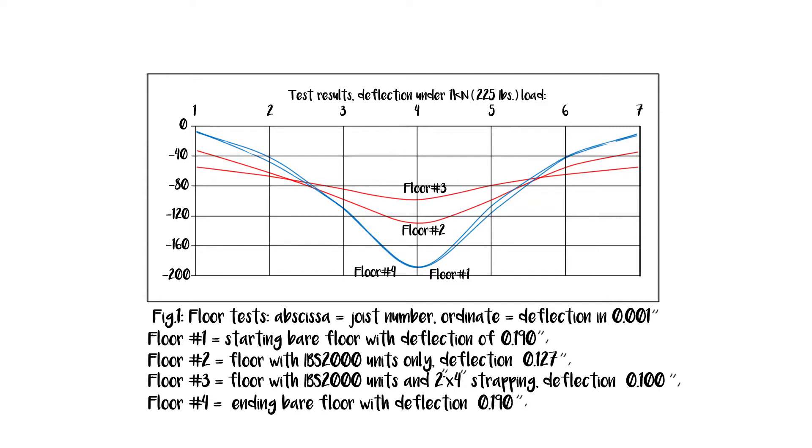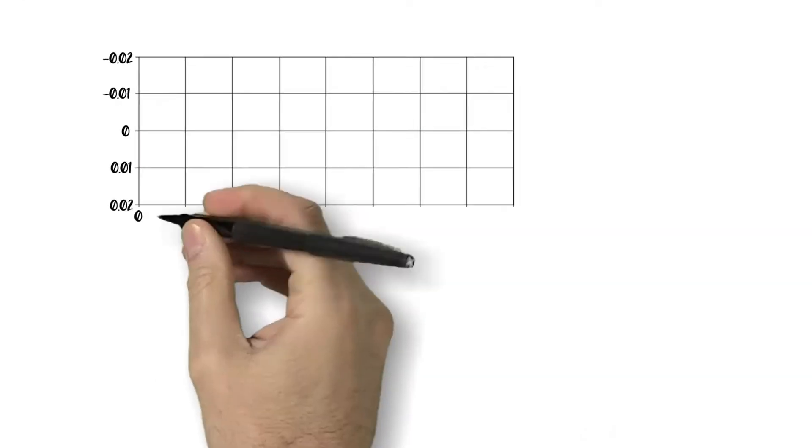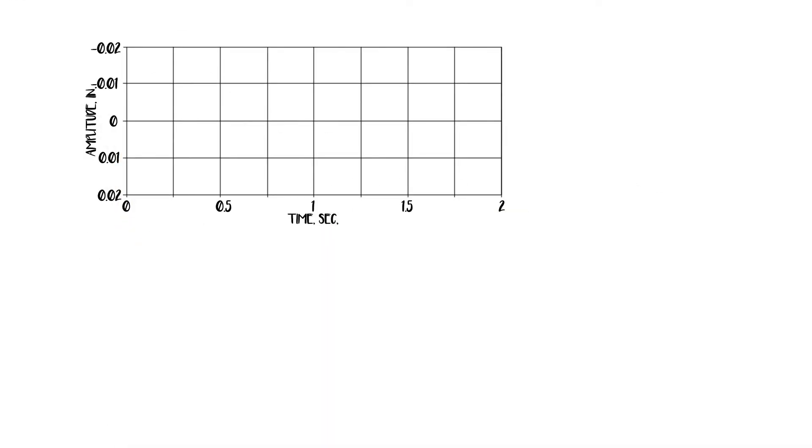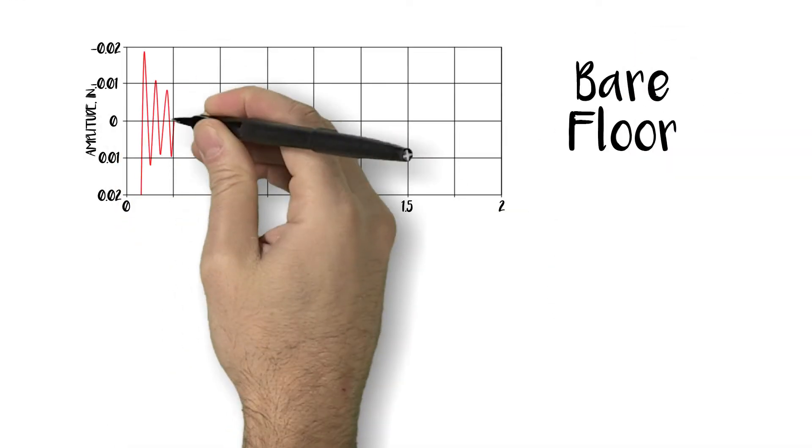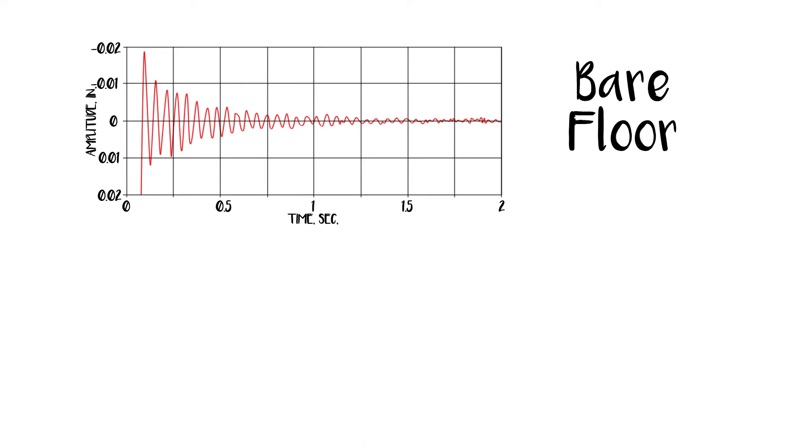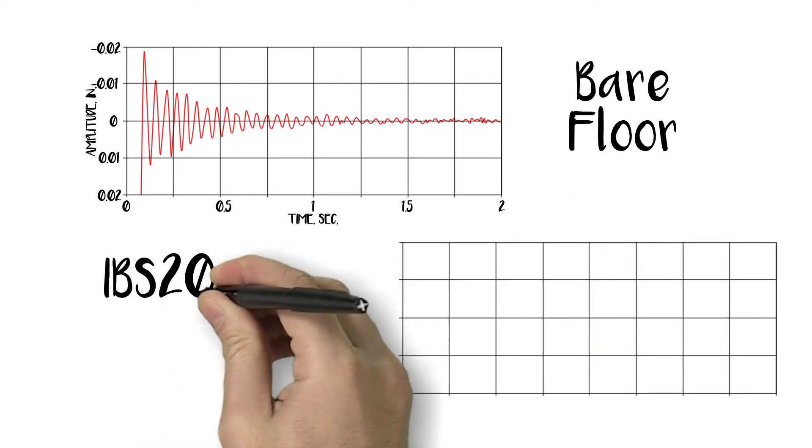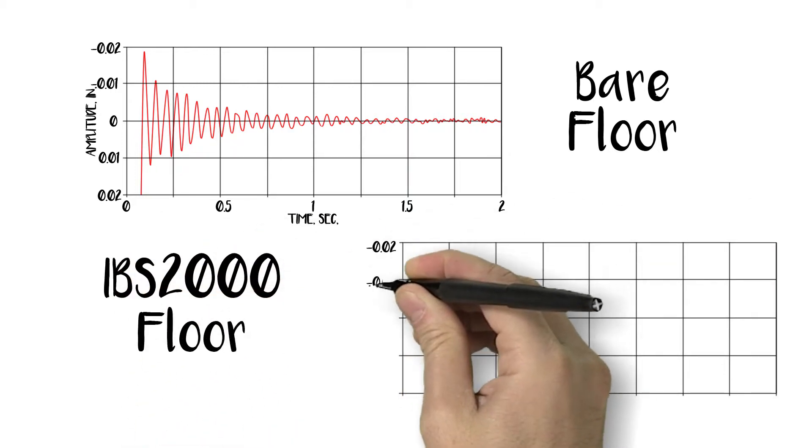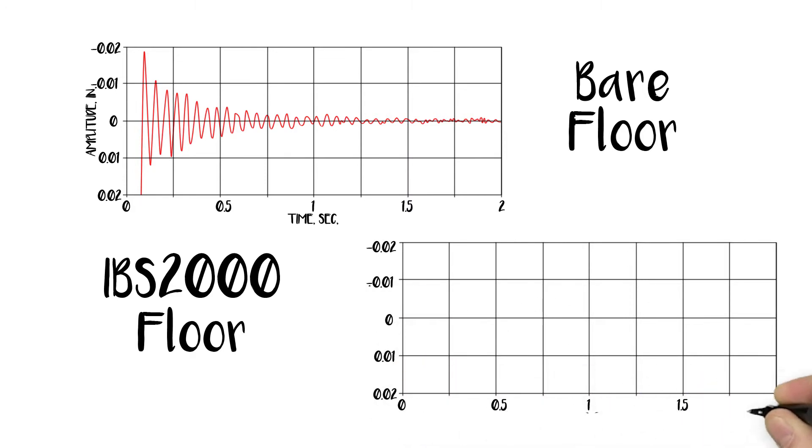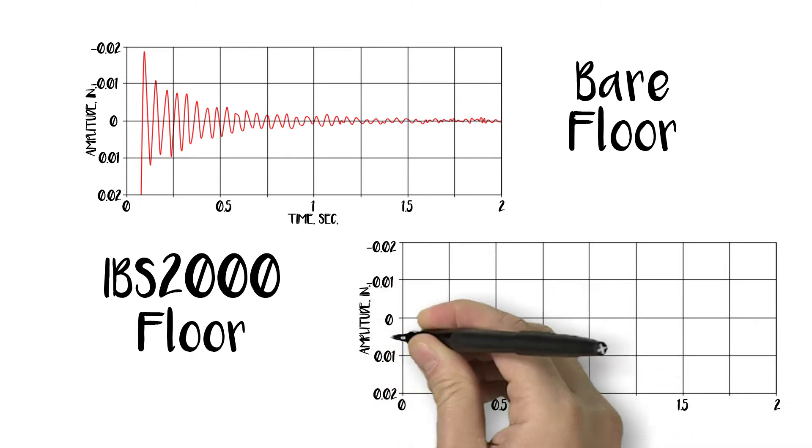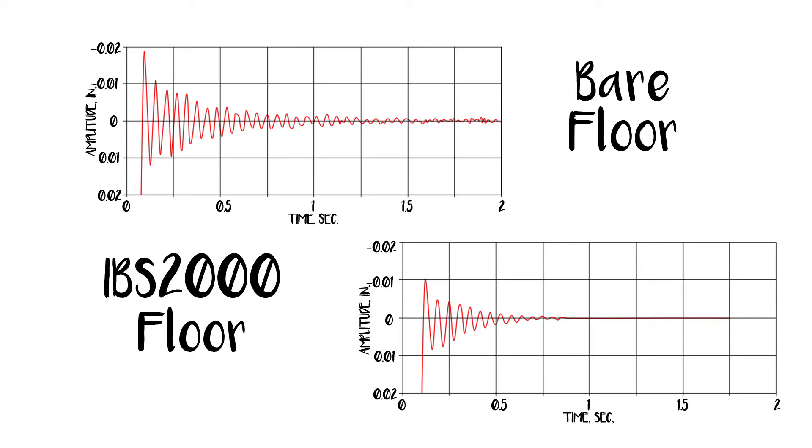That looks impressive. How about dynamic tests? Here are free vibration tests on the same floor. Figure 2, bare floor, maximum amplitude is .019 inches and duration of vibration is about 2 seconds. Figure 3, the same floor equipped with IBS 2000 units, maximum amplitude is .01 inches and duration of vibration is .85 seconds. So the IBS 2000 floor had smaller amplitude, shorter vibration time, and much less work.